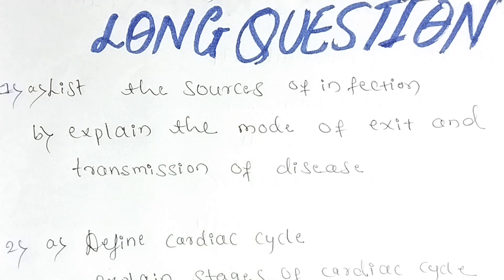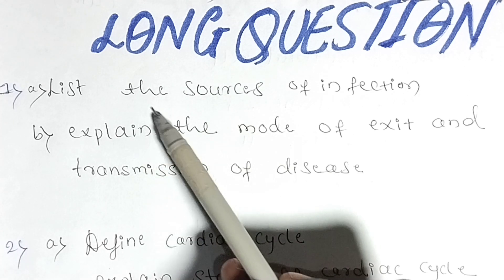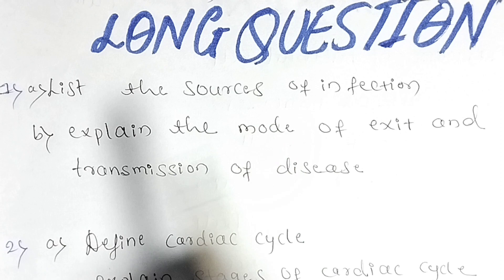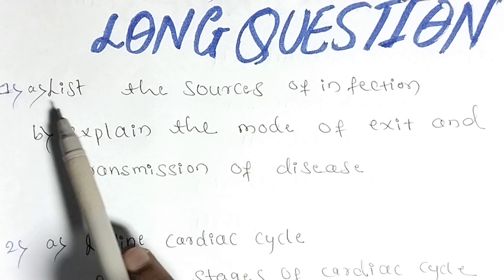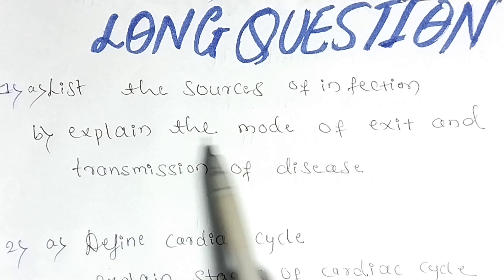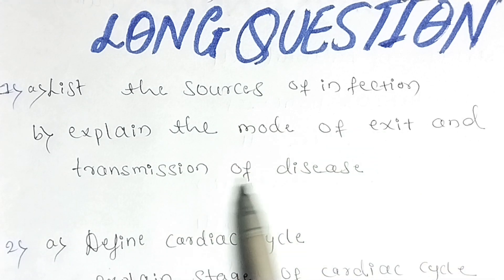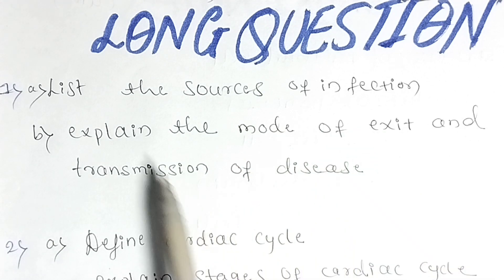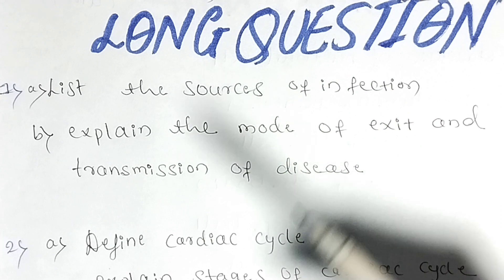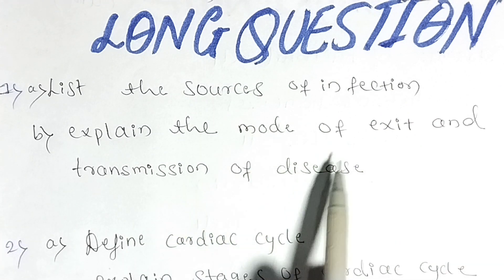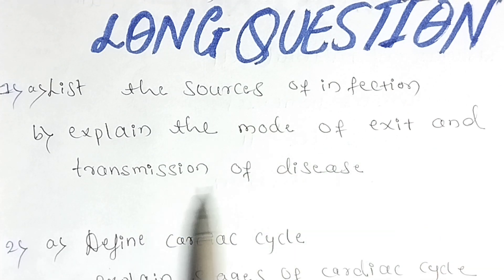Hello dears, welcome to the Samudana Singh channel. In this video we are discussing long questions in Anatomy, Physiology, and Microbiology for first year GNA. The first question is: list the sources of infection. The B option is: explain the mode of exit and transmission of disease.